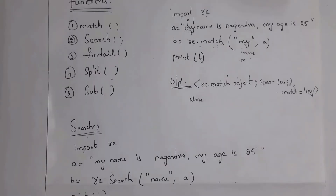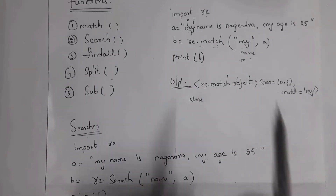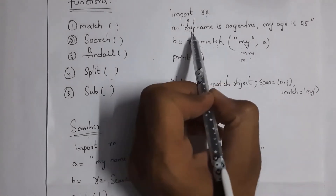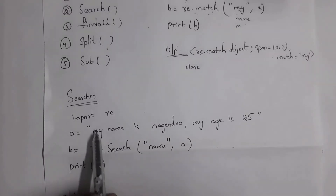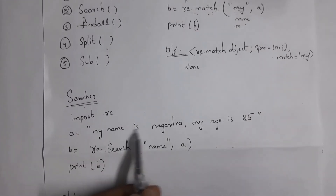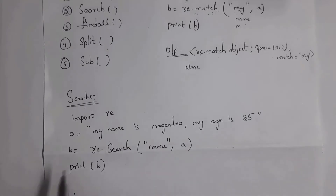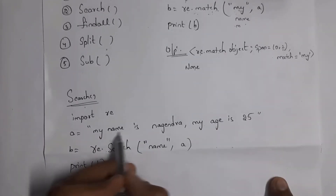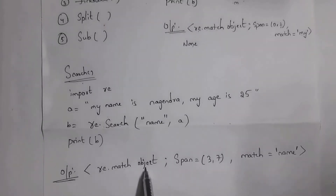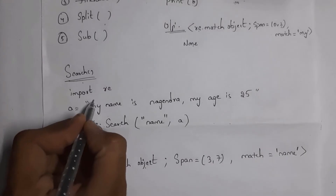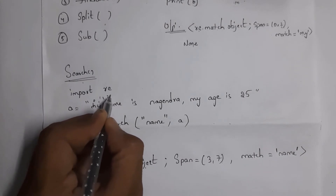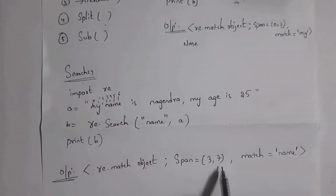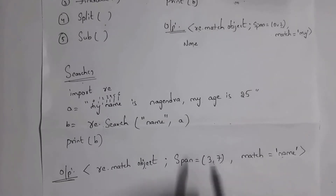Next is the search function. The search function is the same as match function, but the only difference is that match is used to identify characters available at first, whereas search is used to identify characters located at any place in a given string. In place of re.match I write re.search with 'name'. It checks whether 'name' is available anywhere — yes it is — and the output is: span=(3, 7), match='name'.